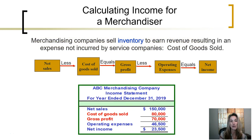The same thing holds true for merchandisers. However, the difference between a service company and a merchandiser is a merchandising company will sell inventory to earn their revenues, as opposed to just selling their time. That results in an expense that's not incurred by service companies — that expense is the cost of the inventory that was sold to earn the revenues.